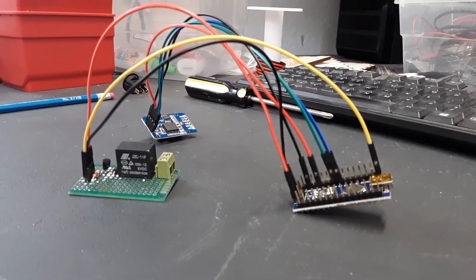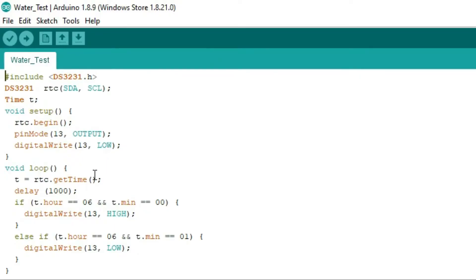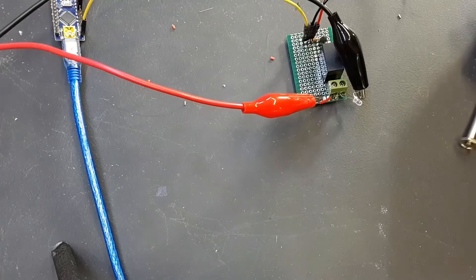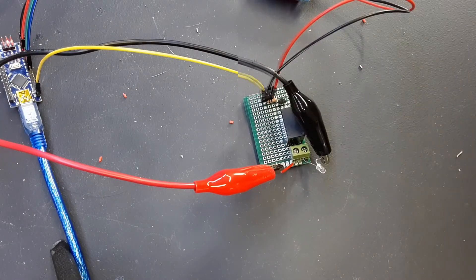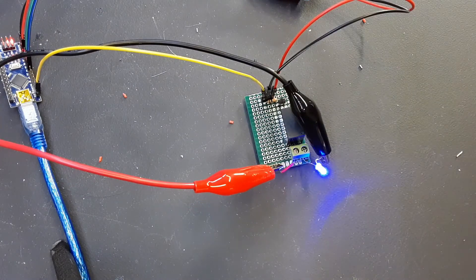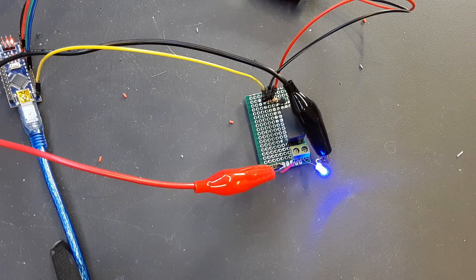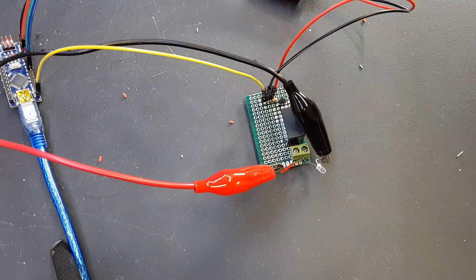Once the relay was hooked up, I wrote a simple piece of code that triggers the relay at a specific time. Then I uploaded the code and hooked up an LED to the relay to test the circuit. About one minute later, the LED lit up and exactly one minute later, it turned off. This is exactly what I specified in the code.